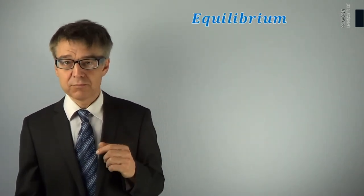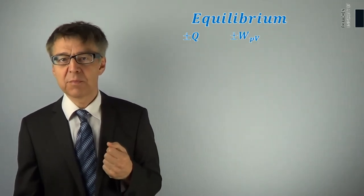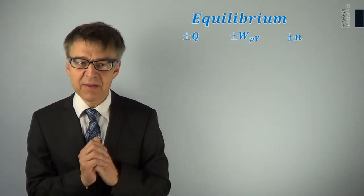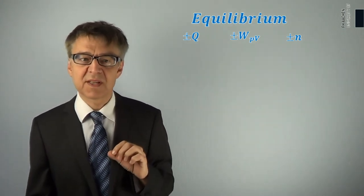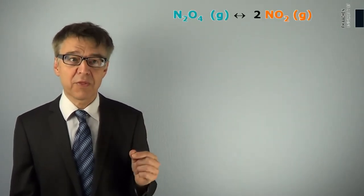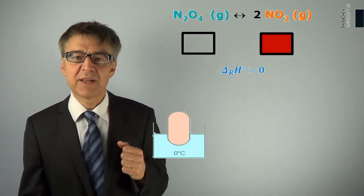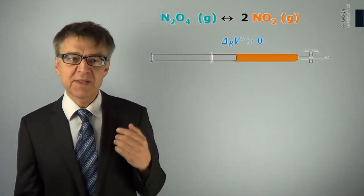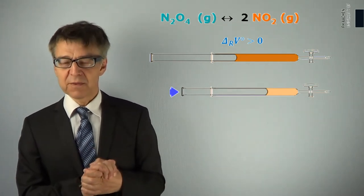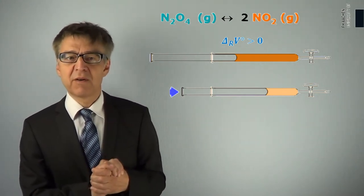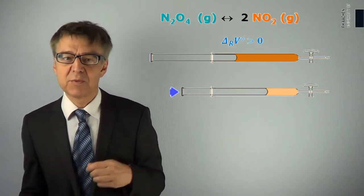If a system in equilibrium experiences a restraint, the system shifts to counteract the imposed change and a new equilibrium is established. The reaction 2 N2O4 to NO2 is endothermic; with increasing temperature, the equilibrium will shift to the right. The reaction is also endochoric; with increasing pressure, the equilibrium will shift to the left. This is the principle of Le Chatelier and Brown, sometimes called the principle of least restraint — the restraint will be consumed.